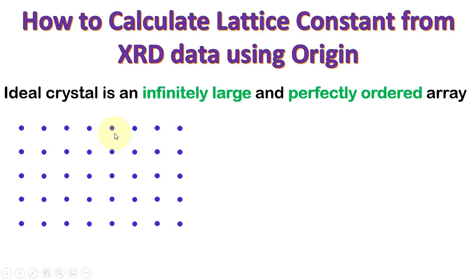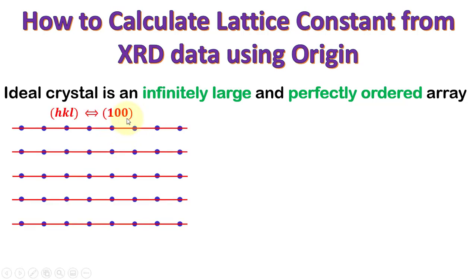Different planes exist in a crystal sample, and we have different orientations of the planes. It depends on which direction the X-ray is getting its reflection. Different planes are mentioned with the help of HKL indices, which we call Miller indices. This plane we call the 100 plane. The spacing between two planes we call interplanar spacing, represented by D-HKL — in this case, D100.